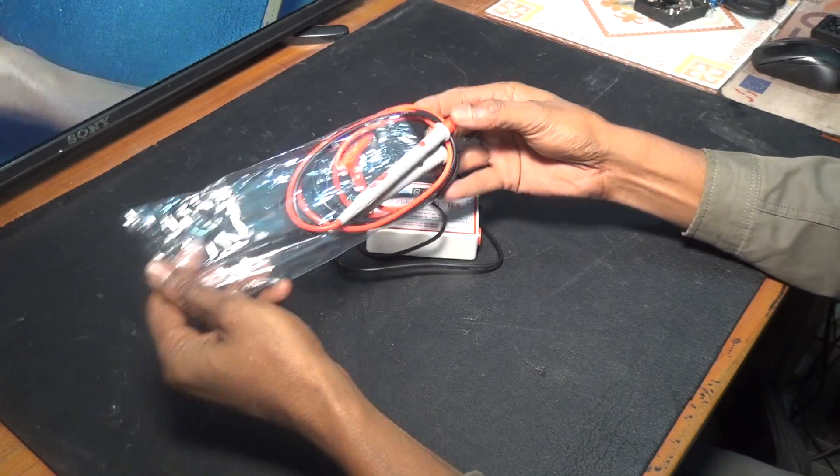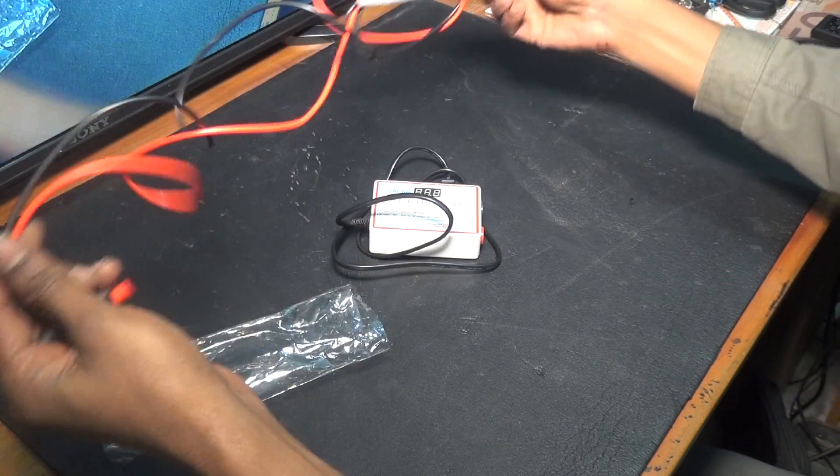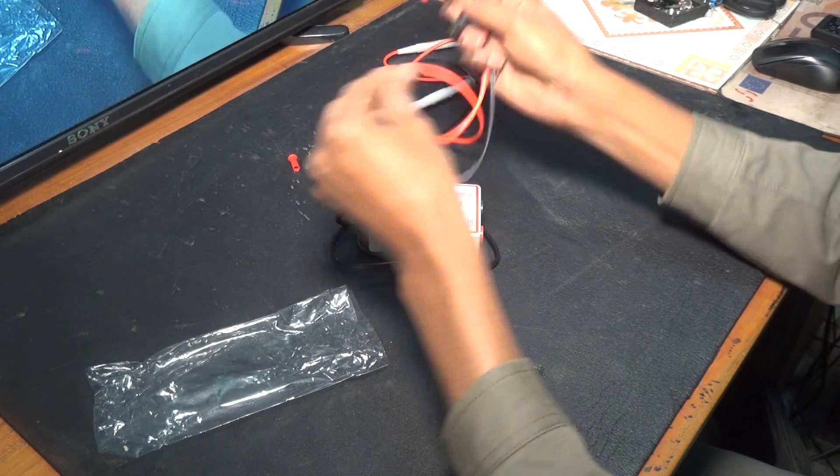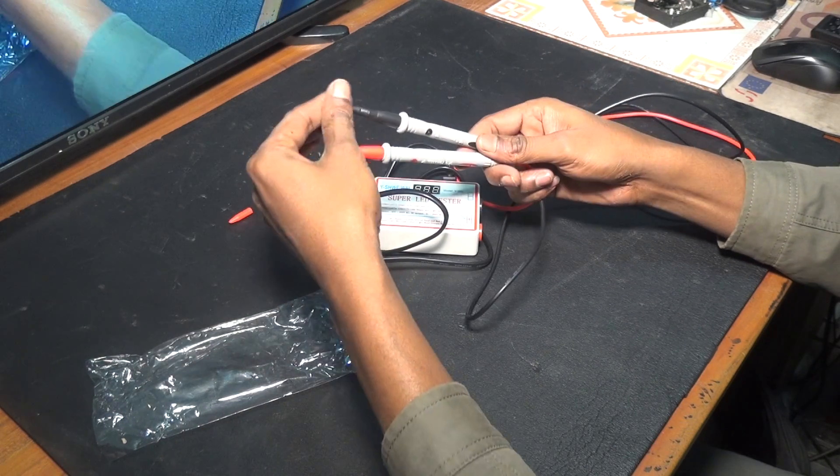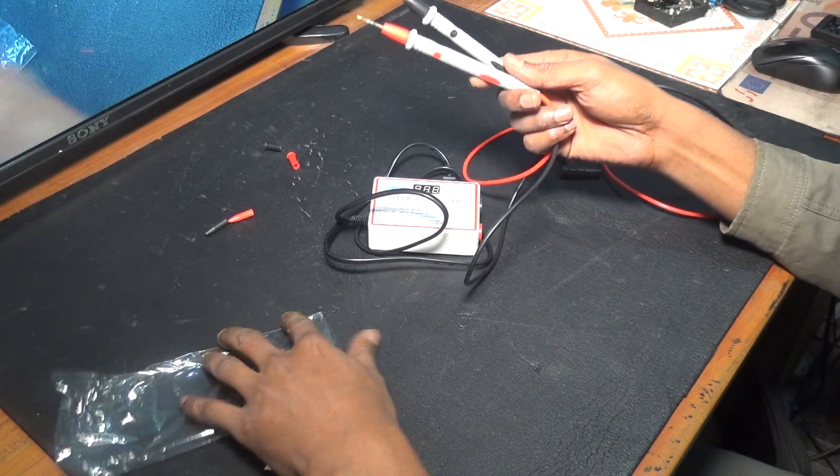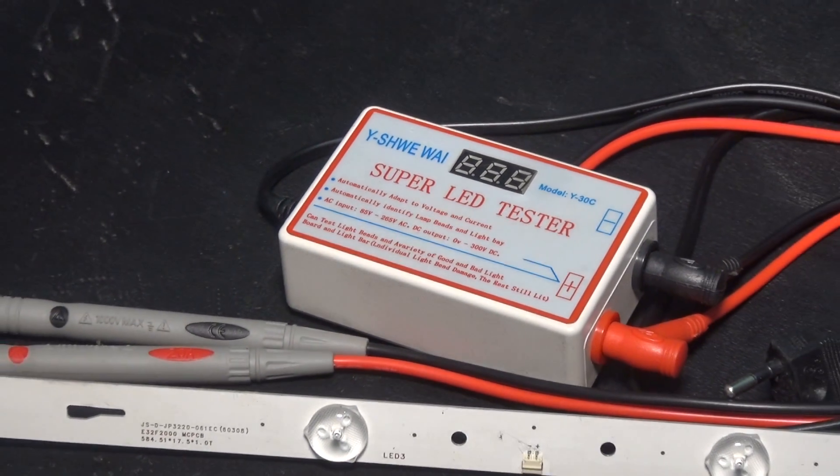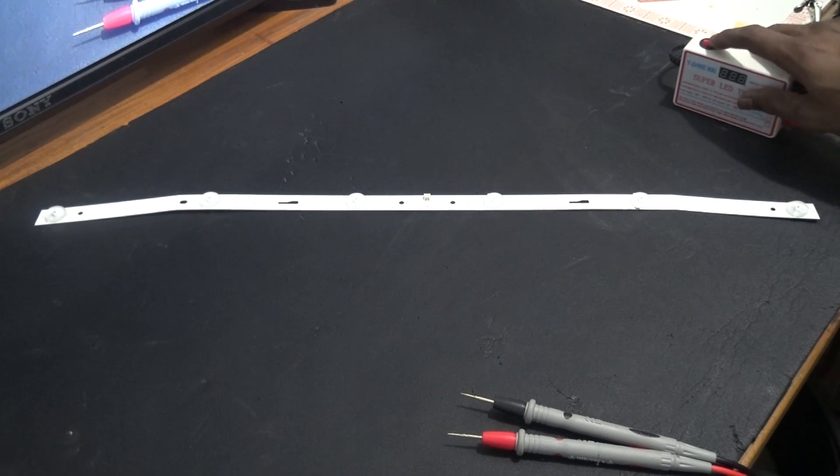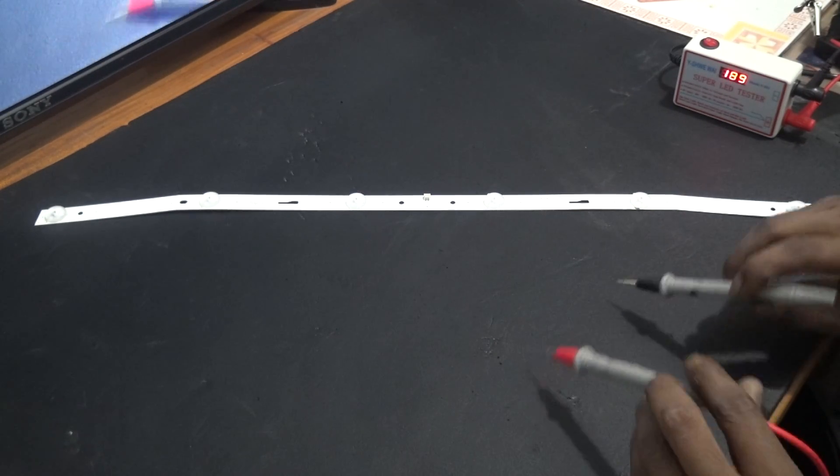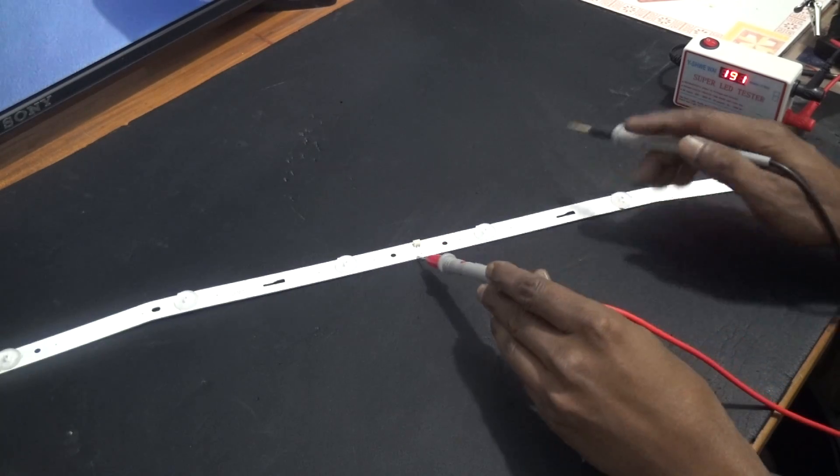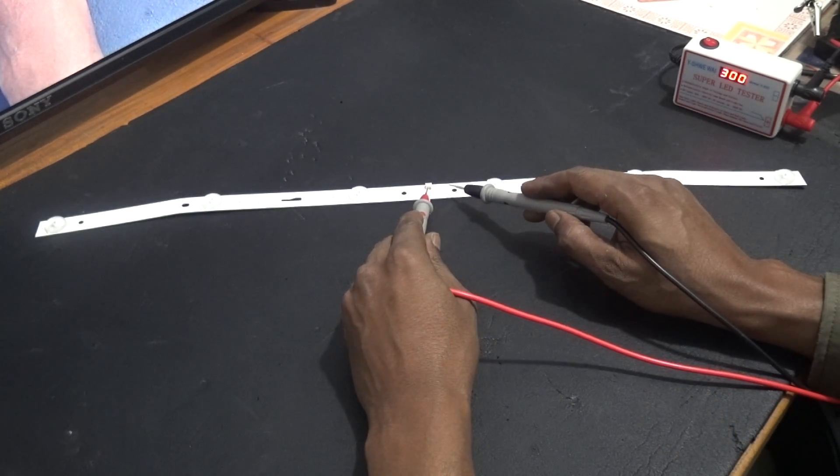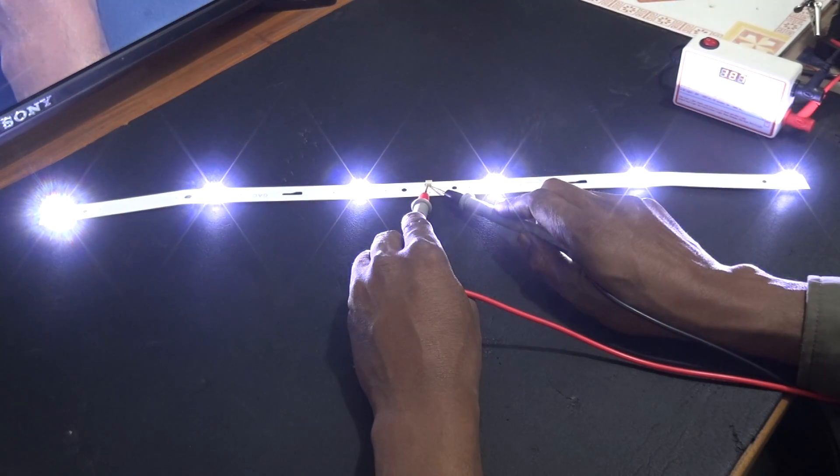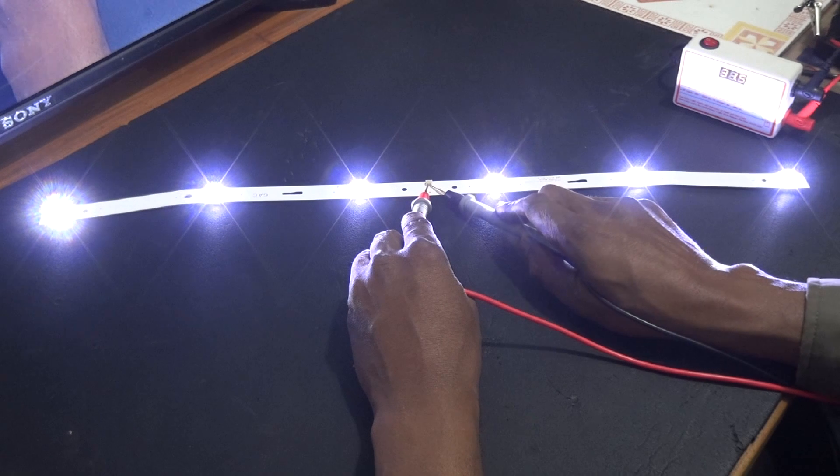With this backlight tester you can test each valve separately and also calculate valve polarity. Basically these types of bulbs are of two kinds. Test the complete stick lamp. It also detects voltage polarity, cathode and anode.